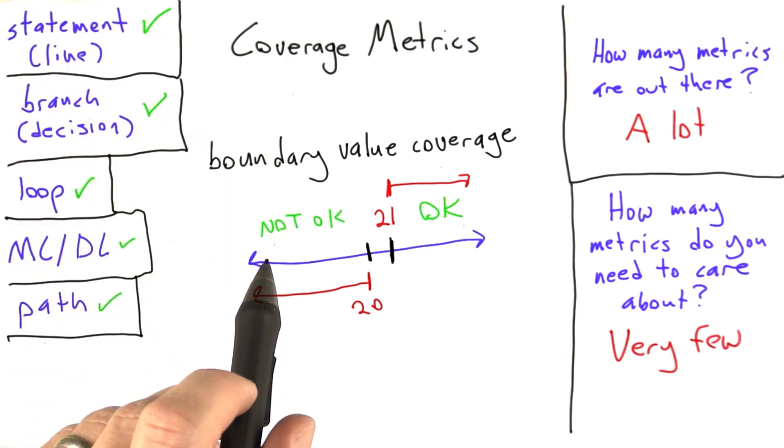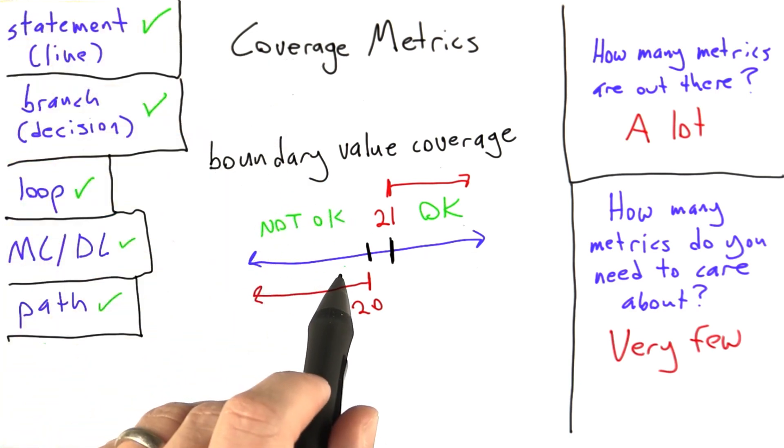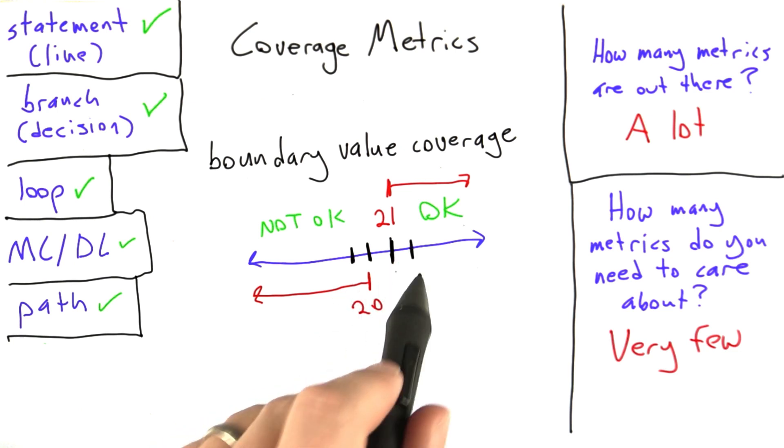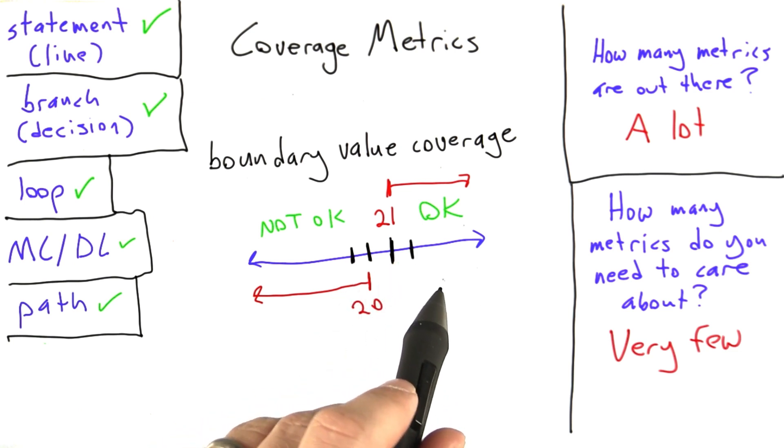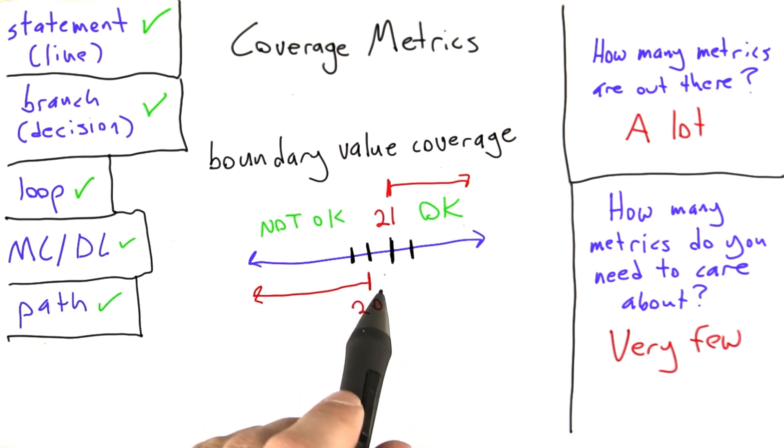If we wanted to get boundary value coverage on this program, we'd want to include the ages of 20 and 21 in our test input, and possibly also 19 and 22, since they're close enough to the boundary values that there may be interesting behaviors lurking there as well.